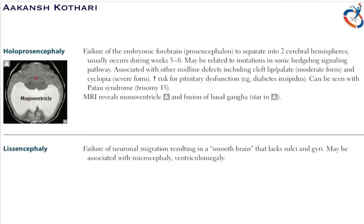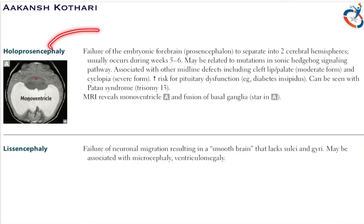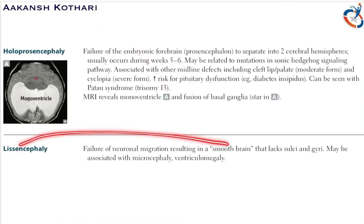Lissencephaly involves a failure of neuronal migration, which results in smooth brain formation. In lissencephaly, there is absence of sulci and gyri and hence the brain is smooth. It may be associated with microcephaly or ventriculomegaly. Remember: in holoprosencephaly there is a monoventricle, and in lissencephaly it is a smooth brain.